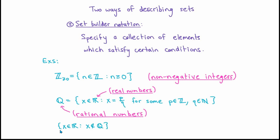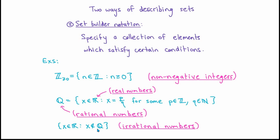Another important example constructed using set builder notation is the set of all real numbers which are not rational. This is called the set of irrational numbers. We're not going to introduce a symbol for it because there's not really a universally agreed upon symbol. Later on when we talk about set operations, we can describe this set as R set minus Q, or as the complement of Q inside of R, but don't worry about that right now.